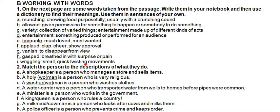You have to make sentences from these words and write them on your notebook. Next, match the person to the description of what they do. A shopkeeper is a person who manages a store and sells items. A holy man is a person who is very religious. A washer man is a person who washes. A water carrier was a person who transported water from wells to homes before pipes were common. A king or queen is a person who rules the country. A milk maid or cowman is a person who looks after cows and milks them. A police officer is a person who prevents crime and keeps order.